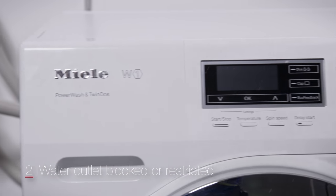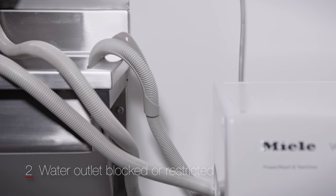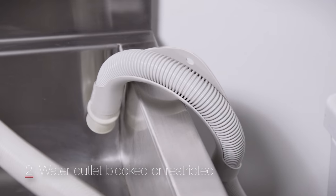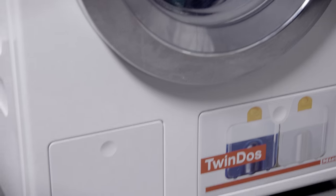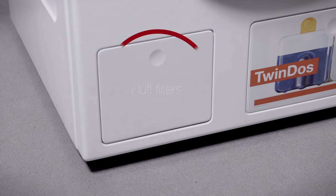The second cause of a drain fault may be due to the drain outlet being blocked or restricted. If you think this may be the cause, the fluff filter and drain pump will need to be cleaned. These are located on the bottom left corner of the washing machine.